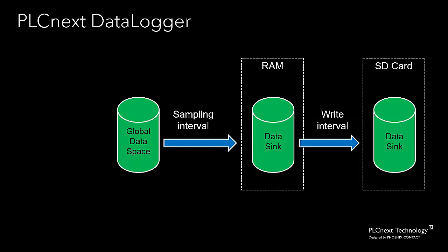It's actually important to realize that the write interval is not actually a time interval. In the PLCnext data logger, the write interval represents a count — a count of the number of records that are accumulated in the in-memory data sync before that data is written to the SD card. We would like the write interval to be as high as possible, which means we write to the SD card at the lowest frequency possible. But if we make the write interval too large, that will use up all the available memory in the RAM. So it's a trade-off between those two factors when choosing a write interval for a particular application.